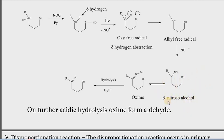This delta-nitroso alcohol tautomerizes to form the oxime. The nitroso alcohol may be isolated as a dimer, or it may rearrange into the oxime. The nitroso and oxime compounds produced may further be transformed into functional derivatives such as carbonyl compounds, cyano compounds, and amino compounds.